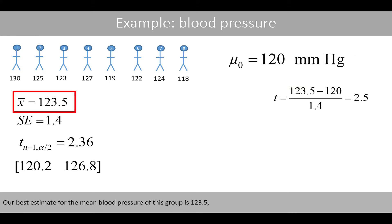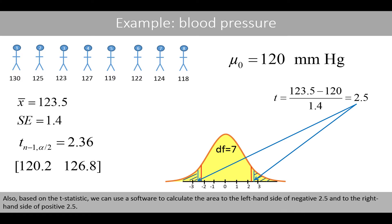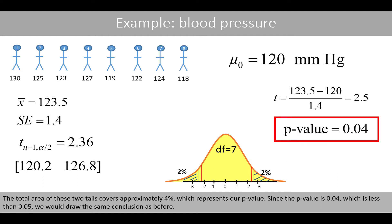Our best estimate for the mean systolic blood pressure of this group is 123.5, and we are 95% certain that the true population mean lies somewhere between 120.2 and 126.8. Based on the t-statistic, we can use software to calculate the area to the left of negative 2.5 and to the right of positive 2.5. The total area of these two tails covers approximately 4%, which represents our p-value. Since the p-value is 0.04, which is less than 0.05, we draw the same conclusion as before.